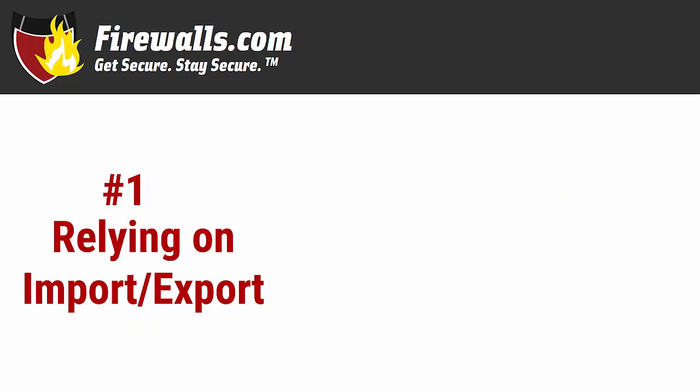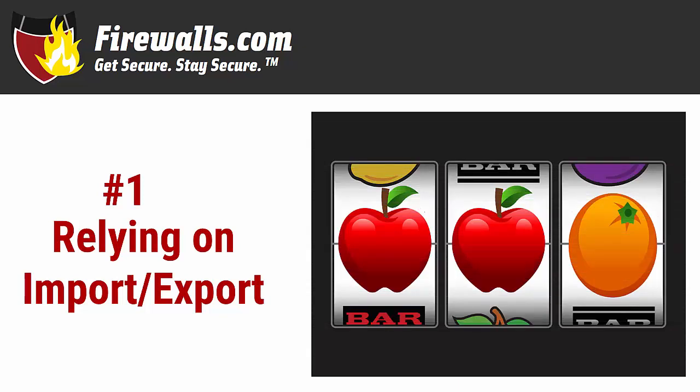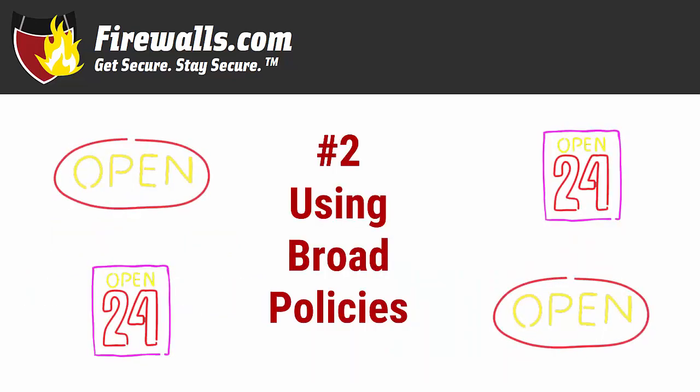Number one: relying on import/export. Whether you're setting up a new network from scratch or replacing a firewall in an existing setup, pulling the configuration from another firewall or network is probably a mistake. While those settings likely reflect your organization's priorities, if the firewall model or network is not exactly the same, it's like comparing apples to oranges. Each firewall speaks a slightly different language, so some pieces from the configuration can get lost in translation.